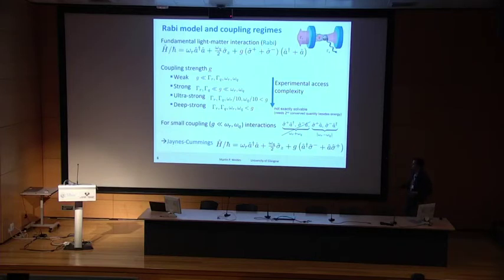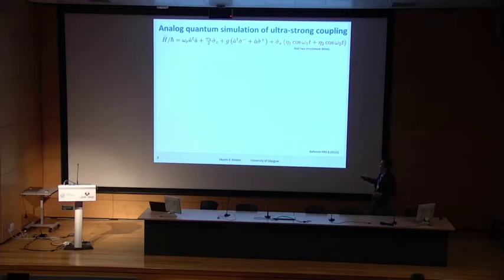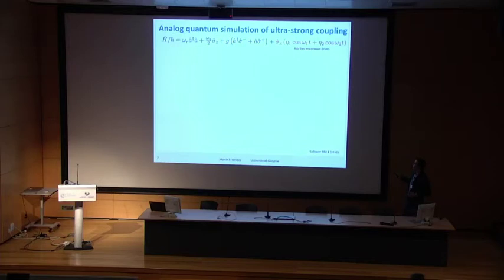A few years ago, one of our conference organizers made a theory proposal showing that if you take a Jaynes-Cummings Hamiltonian and apply two transverse microwave drives — Rabi drives with amplitudes η₁ and η₂ and frequencies ω₁ and ω₂ — interesting things happen.